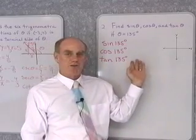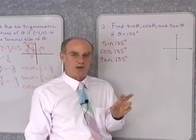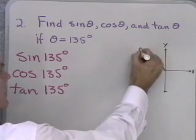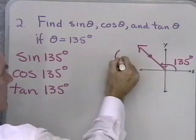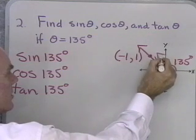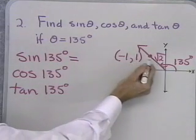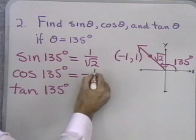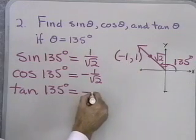To find sine, cosine, and tangent of 135 degrees, I need a point on the terminal side. Let's draw 135 degrees in standard position and find a point on the terminal side. A point on the terminal side is x = -1, y = 1. The distance from the origin to this point, by the Pythagorean theorem, is √2. So the sine of 135° = y/r = 1 over √2.